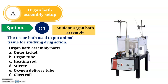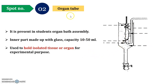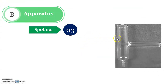Now let us discuss spot number two. This spot is the Organ Tube, in which we place or put the isolated organ. With the help of this we check the activity; the capacity is about 10 to 50 ml. This is spot number two.